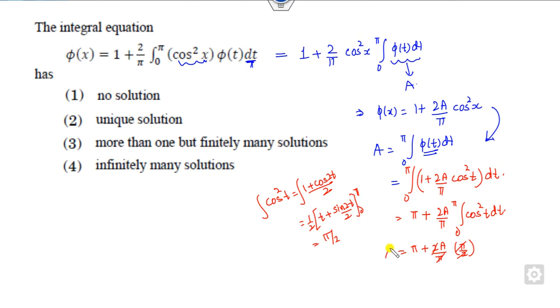What will happen: this cancels out, right? Left hand side is a, so a equals pi plus a, which is a contradiction, which is not possible. What is the meaning of that? It has no solution. That is the right answer.